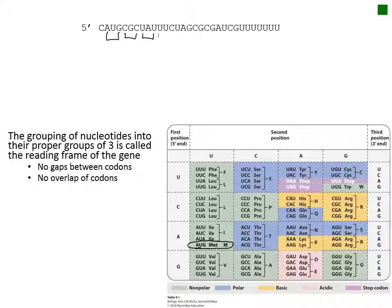Once the correct reading frame is set, we will be able to use the codon chart to determine which amino acid each codon corresponds to. We already know that the first amino acid is methionine. The second codon, CGC, when we look into the codon chart, we find CGC corresponds to the amino acid arginine. Our third codon, UAU, when we find in the codon chart, corresponds to the amino acid tyrosine. The fourth codon, UUC, is phenylalanine.